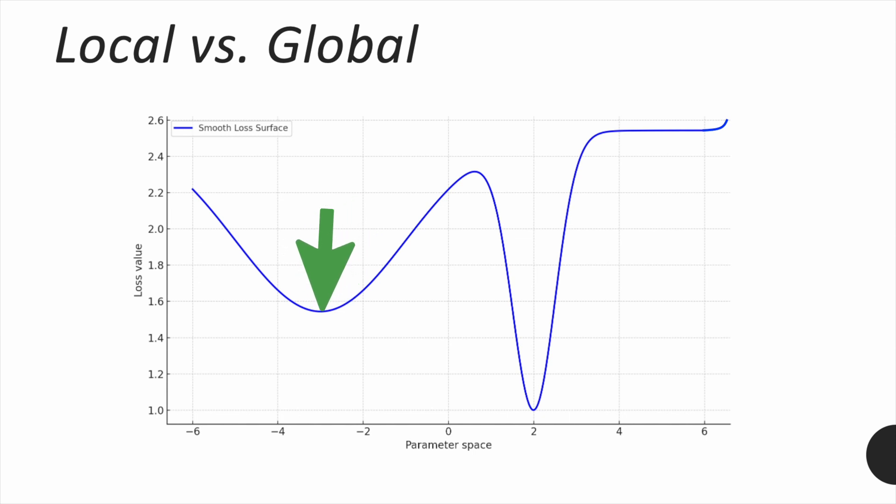This means an optimizer might find a local minimum, which is not globally the best solution. This usually happens if it uses gradient-based methods, like gradient descent. To find the global minimum, not just a local one, we often need more advanced techniques.